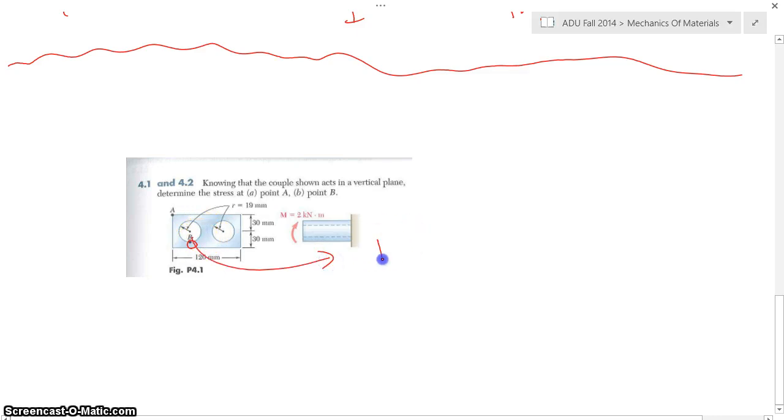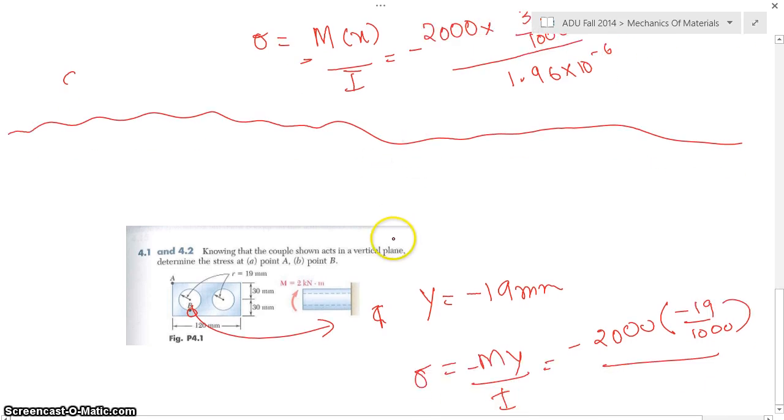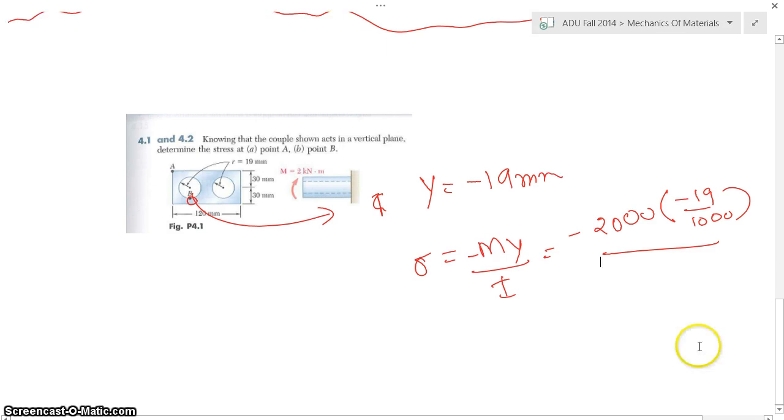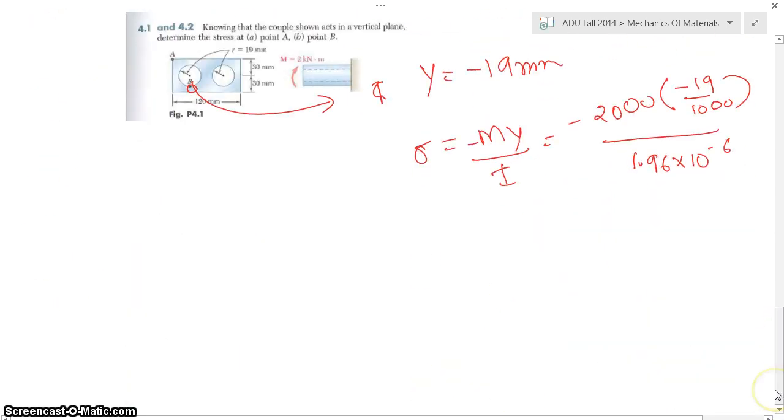So part B has a distance y of minus 19 millimeter. You have to put the whole thing back, just change that distance. Sigma equals minus M Y over I. So minus 2000, times minus 19 over 1000, divided by 1.96 times 10 to minus 6. The previous answer was negative, this answer is positive. As you can see, the down part is having tension. So tension is positive. Compression negative, tension positive.